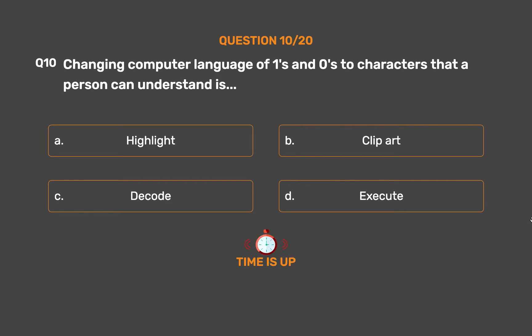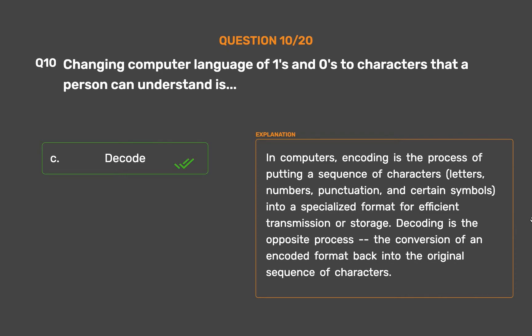The correct answer is Option C: Decode. In computers, encoding is the process of putting a sequence of characters — letters, numbers, punctuation, and certain symbols — into a specialized format for efficient transmission or storage. Decoding is the opposite process: the conversion of an encoded format back into the original sequence of characters.